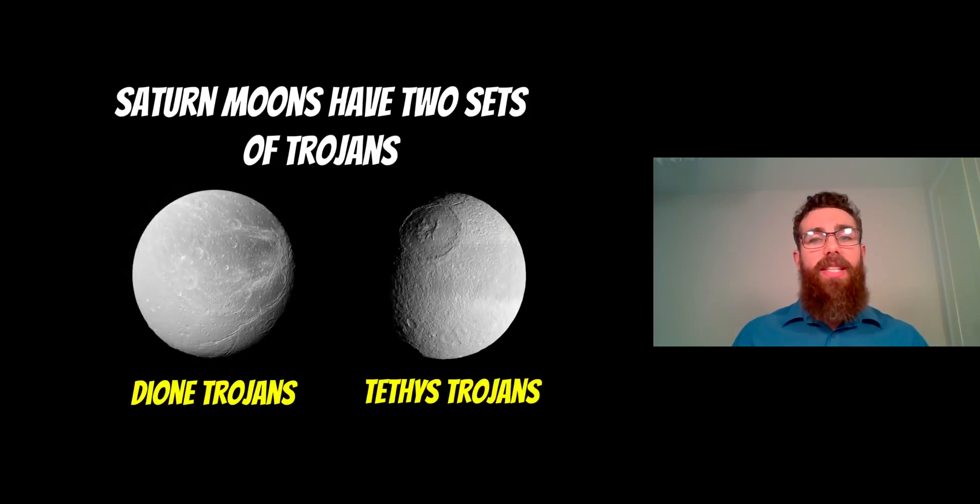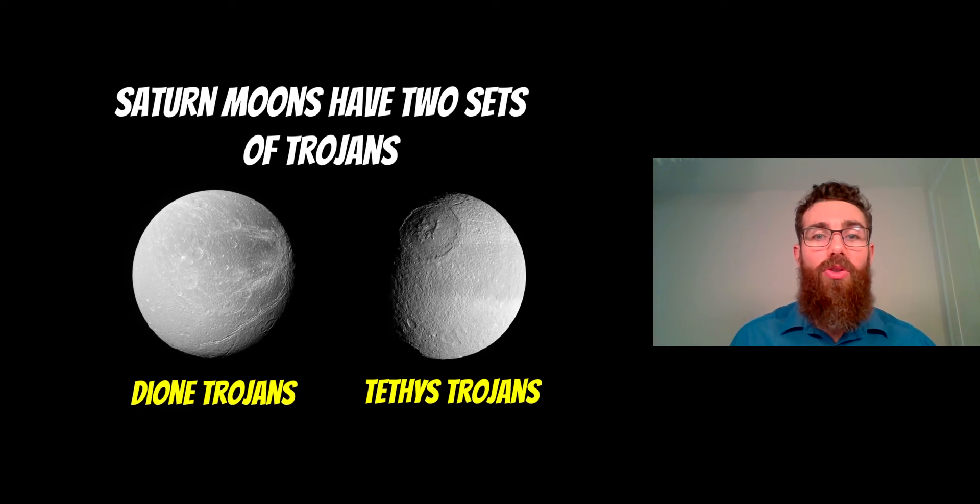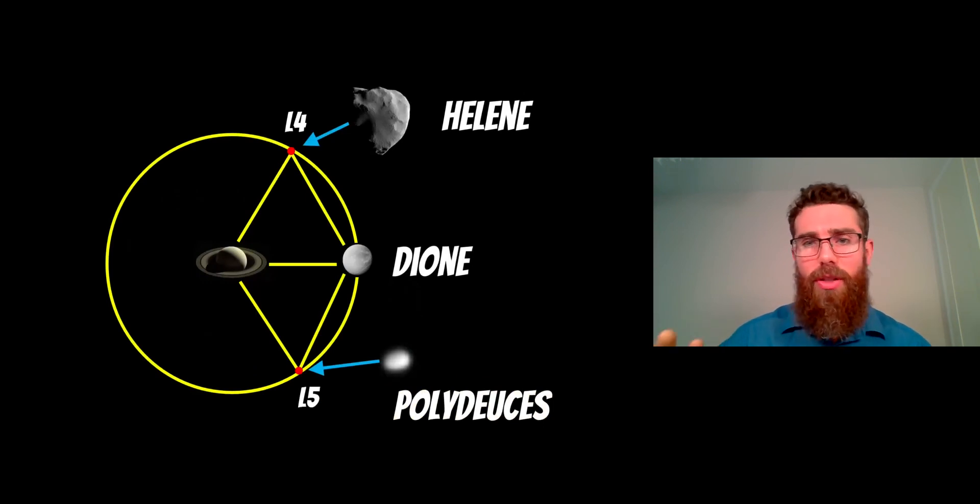Saturn is the only one that has true Trojan moons in the sense that they orbit the planet. They orbit Saturn and they are co-orbital moons with two of the larger moons. So there's actually two sets—you've got Dione and then you've got the other one, Tethys. And you've got two moons either side that are essentially the same setup as what we have with the Trojan asteroids for Jupiter. So with Dione, you've got one at the L4 and L5. These are obviously smaller moons than the main moon. That's one of the criteria for these Lagrange points—they need to be quite small anyway.